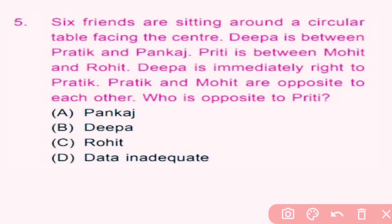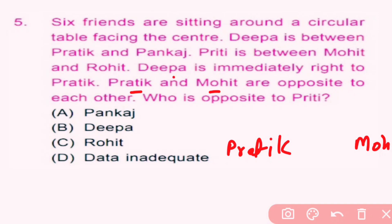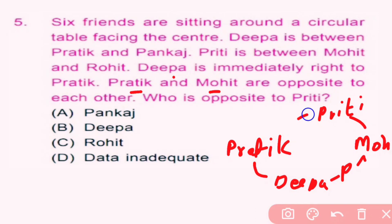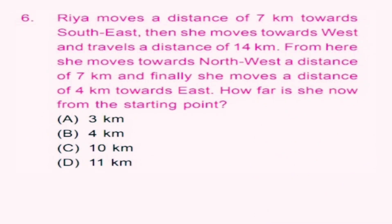Question number 5: Six friends are sitting around a circular table facing the center. Dipa is between Pratik and Pankaj. Priti is between Mohit and Rohit. Dipa is immediately right to Pratik. Pratik and Mohit are opposite to each other. Who is opposite to Priti? Pratik and Mohit are opposite. Dipa is immediately right to Pratik. Pankaj is on the other side of Dipa. Priti is between Mohit and Rohit, with Rohit next to Priti. So Dipa is opposite to Priti. B is the correct answer.